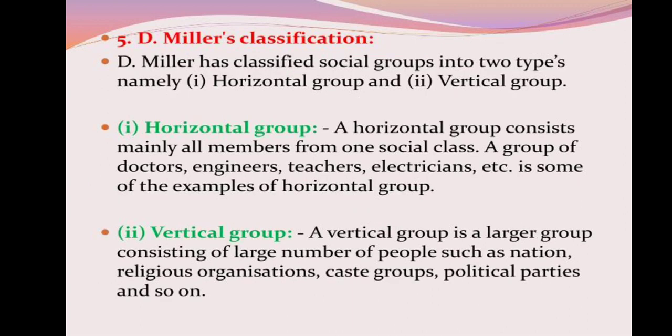Miller's classification: horizontal group and vertical group. A horizontal group consists mainly of members from one social class — groups of doctors, engineers, teachers, electricians, etc. are examples. A vertical group is a larger group consisting of a larger number of people, such as a nation, religious organization, caste groups, political parties, etc.